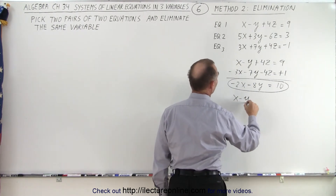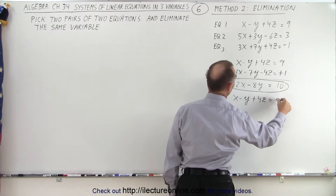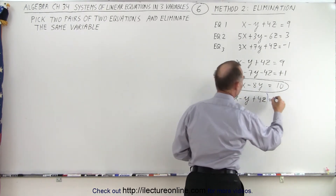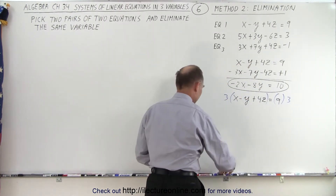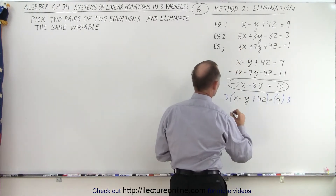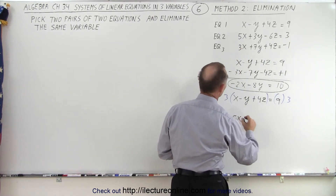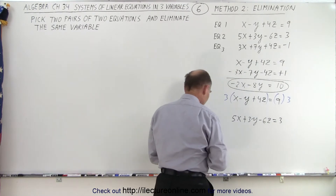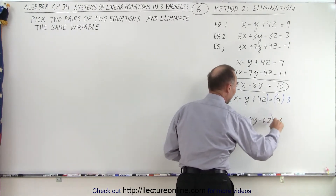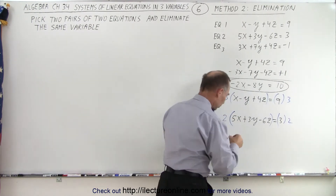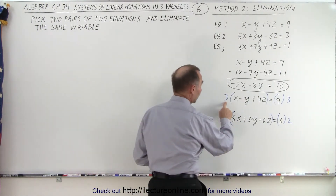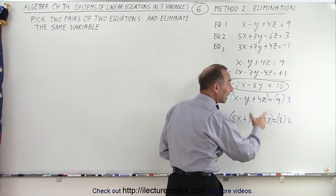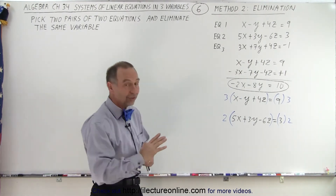So we have x minus y plus 4z is equal to 9. I'm going to multiply both sides by three. And I also take equation number two, 5x plus 3y minus 6z is equal to 3, and multiply both sides by two. It turns out three times 4z is 12z, and 2 times negative 6z is negative 12z. If I add those two together, the z's are eliminated again.